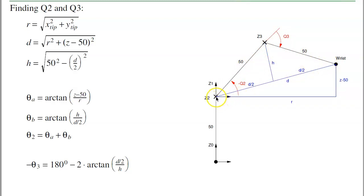Doing some trigonometry. From the shoulder to the tip is distance d. The height above the shoulder is z minus 50. The distance out in the xy-plane is r. r is the square root of x squared plus y squared. This side, d, is the square root of r squared plus z minus 50 squared.